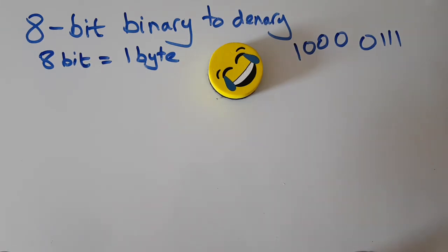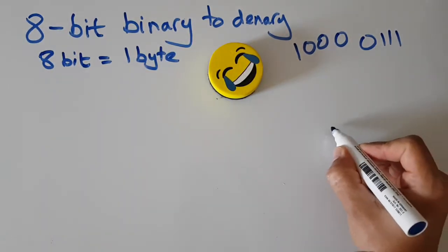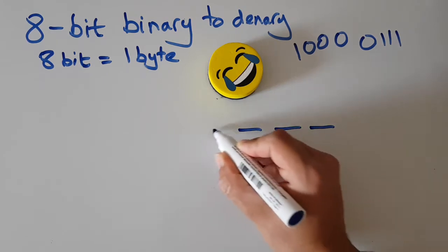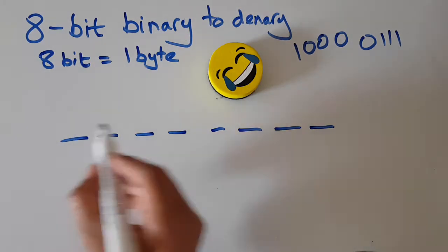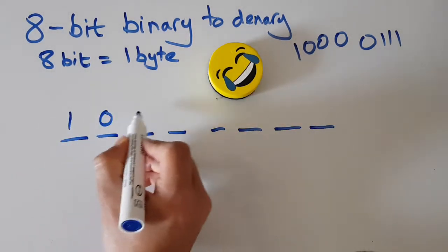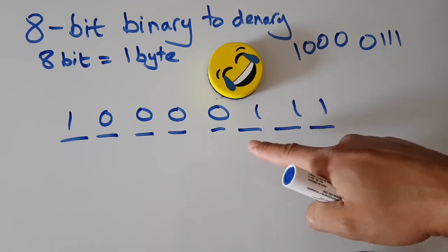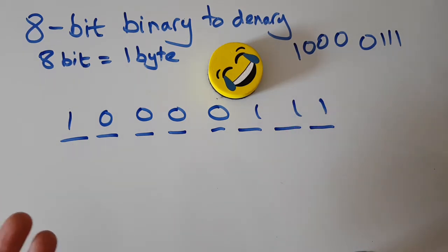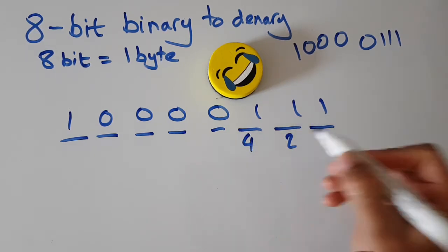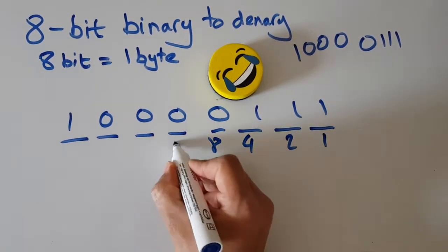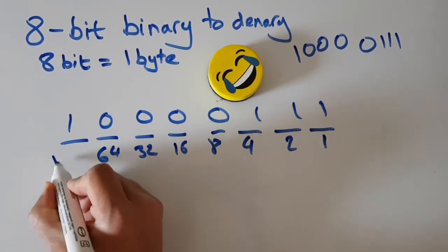I want to know how to convert that from binary to denary. Just like we did with 4 bits, you write out the place values — 1, 2, 3, 4 — and this time I need 8: 5, 6, 7, 8. Then we drop the number on. The system starts with 1, then doubles to 2, doubles to 4, 8, 16, 32, 64, 128.